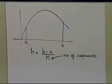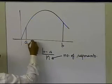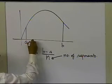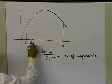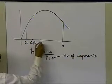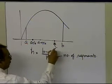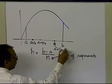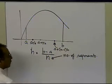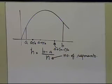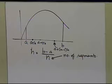Once you have done that, the distance between each of the segments will be h. So the points will be A plus h, A plus 2h, and the last interior point will be A plus (n minus 1) times h, because the last point is B, which is A plus n times h. That's how you identify the individual grid points.